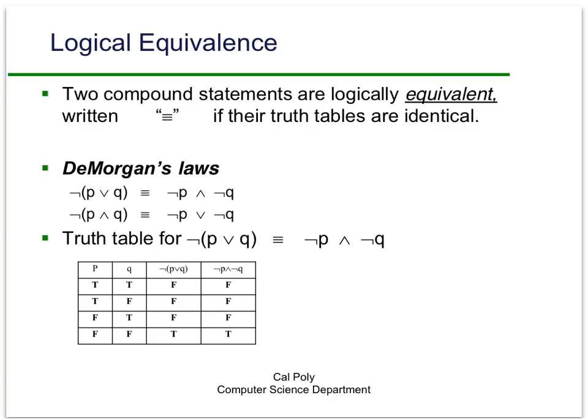We'll explore this by looking at three different important examples where we will use to show that statements mean the same thing, or are logically equivalent. The first of these is De Morgan's Laws. De Morgan's Laws basically state a relationship between the NOT operator and the conjunction and the disjunction operators.